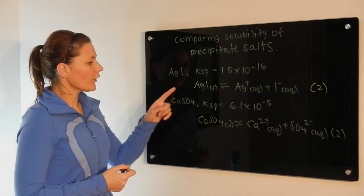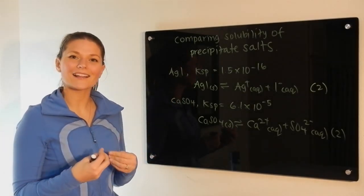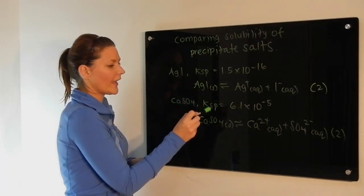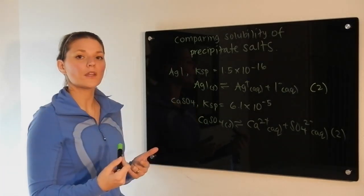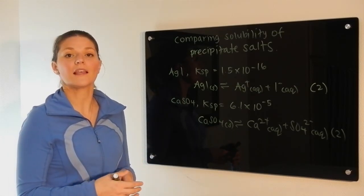So when you are comparing two precipitates that break up into exactly the same number of ions, you can directly compare their Ksp values to determine which is more soluble. The one with the bigger Ksp is more soluble.